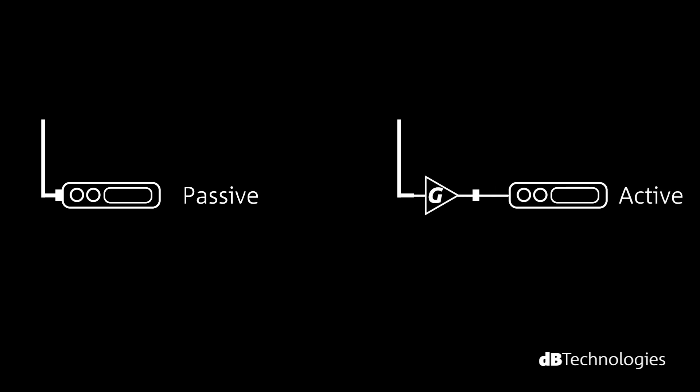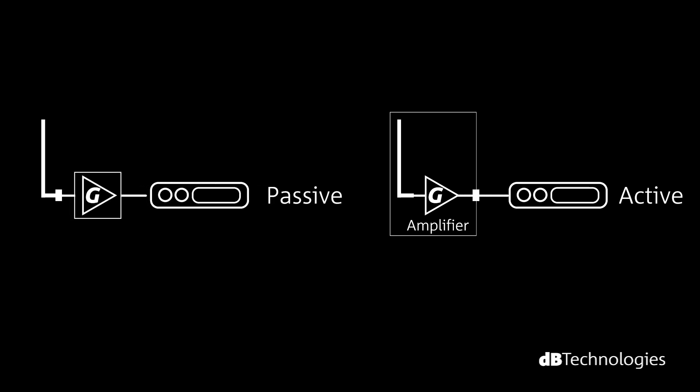Antennas may also be divided into passive and active antennas. Both can have different shapes and sizes depending on the operating frequency for which they have been designed. Active models are characterized by an amplifier system mounted on board of the antenna. A passive antenna can be turned into an active antenna by adding an amplifier in series to the cable.